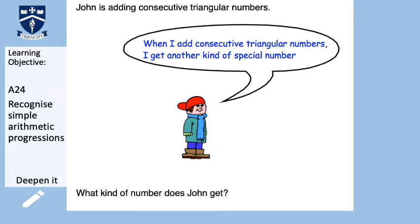Here's a deep-in-it style question. John is adding consecutive triangular numbers. He says: when I add consecutive triangular numbers, I get another kind of special number. What does John get? Remember, consecutive means next to each other — so one and three, three and six, and so on. Have a go, then come back to the video.